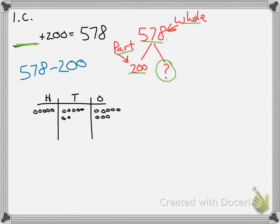I've switched the numbers around so we can see what we're really doing: 578 minus 200. I set up my chip model. I have a hole and a part, and I need to find the other part. I don't take away anything in the ones place — I have eight left there. I don't take away anything in the tens place either, so I have seven. In the hundreds place I only take away two, and I end up with 378.